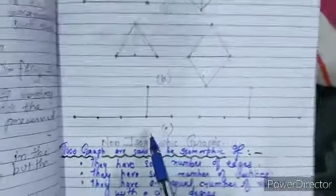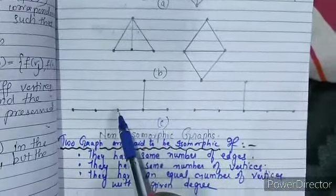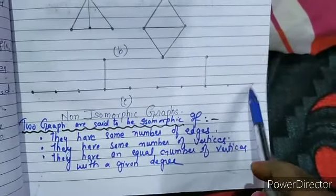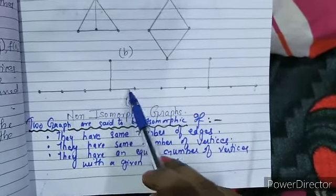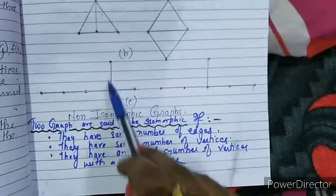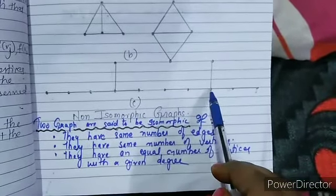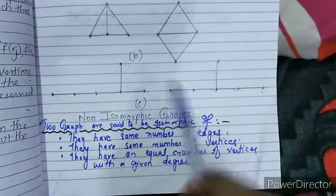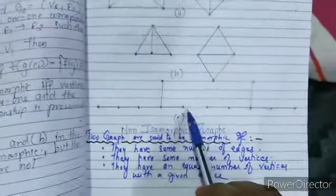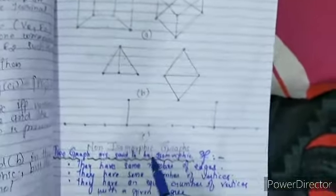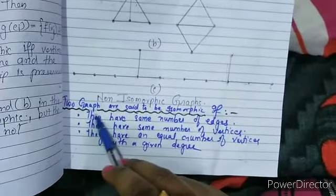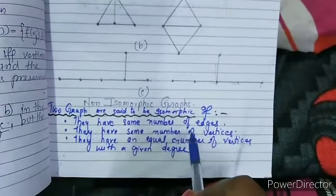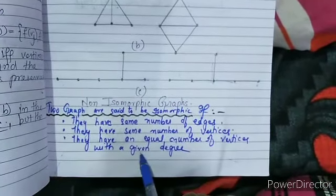Pair C is not isomorphic. Looking at the vertices: both graphs in pair C have 6 vertices each. However, when we count the degree of each vertex, the differences appear. Two graphs are said to be isomorphic if they have the same number of edges, the same number of vertices, and an equal number of vertices with a given degree.